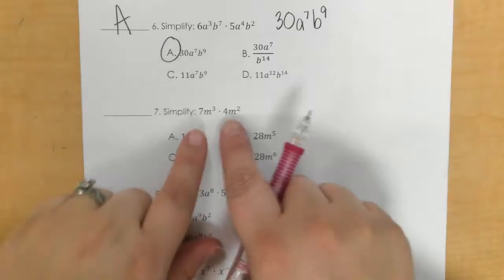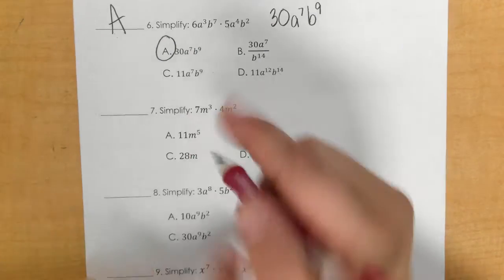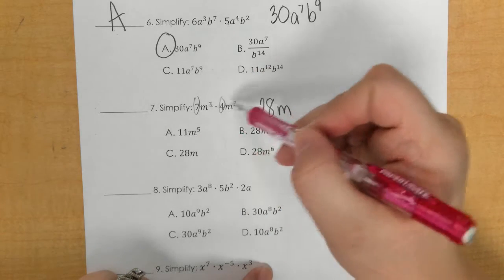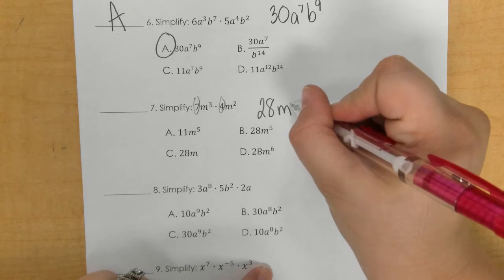For number 7, multiply those big numbers, 7 and 4, so 7 times 4 is 28. And then I add my m exponents, so m to the 5th, which gives 28m⁵.